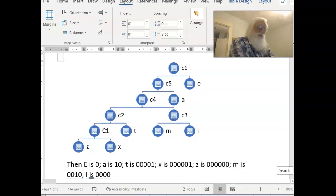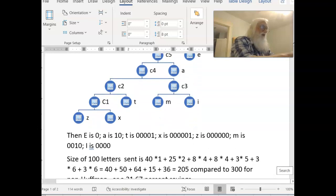And why does this save us space? Well, let's look at a typical message of 100 characters. A typical message would have 40 E's, so that would take us 40 bits. It would have 25 A's, so each A is two bits. It would be 50 bits.